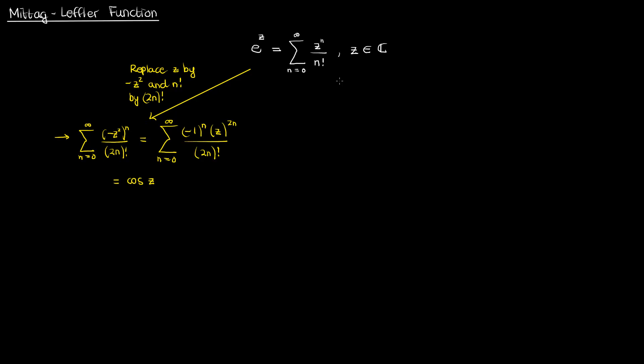But what if I modify my exponential series expansion in another way? What if I replace the z by negative z squared and the n factorial this time by a single 1? In that case this is what I'll get.